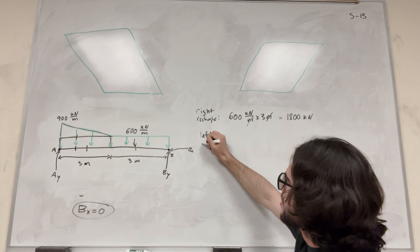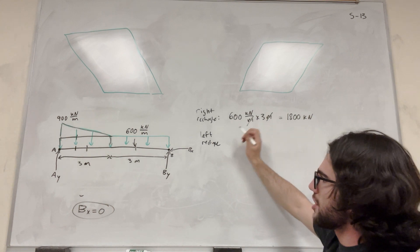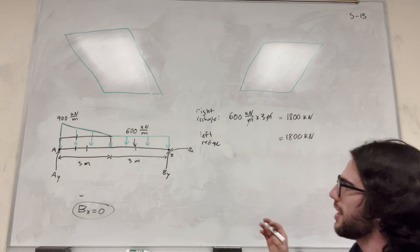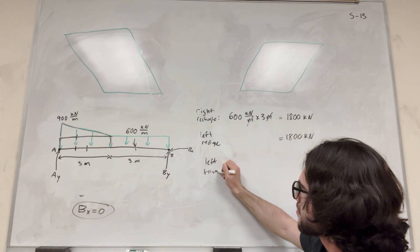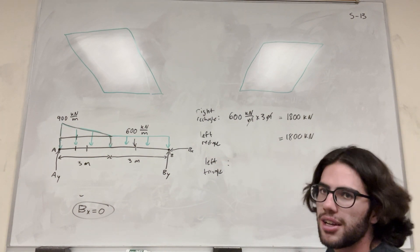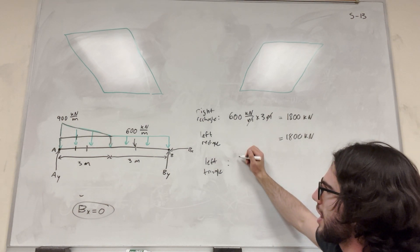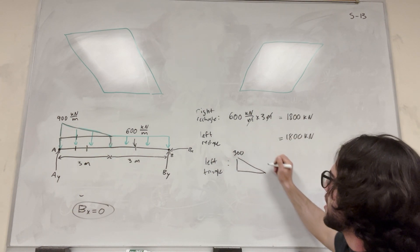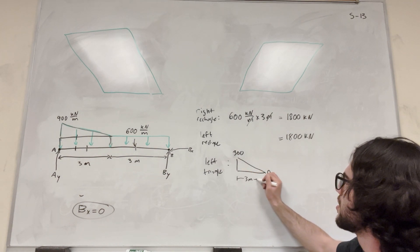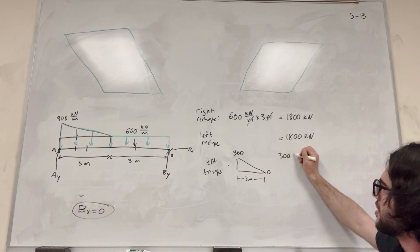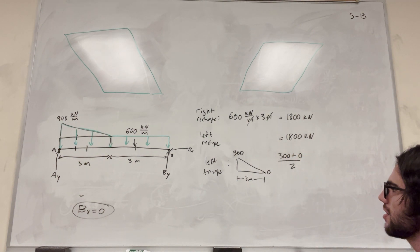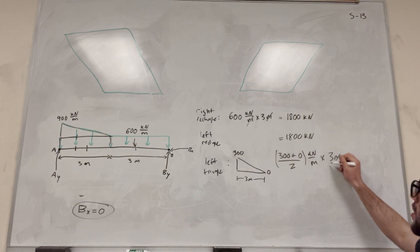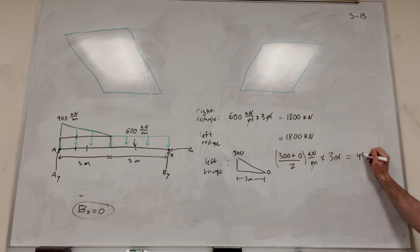Same with the left rectangle. It's also 600 kilonewtons per meter, and it acts for three meters. So we know this is also 1800 kilonewtons. And then now we have the left triangle. So how does this act? Well, we need to find the average of it. It starts at 600. So we already accounted for this, so what we're doing now is we're making a force that looks like this. So this is 300, and this is zero, and then it acts for three meters. So this is going to be 300 plus zero divided by two, just the equation of a triangle. And this is kilonewton meters, and then it acts for three meters. So the meters cancel, and we get 450 kilonewtons.